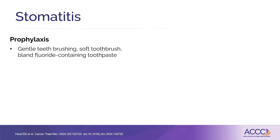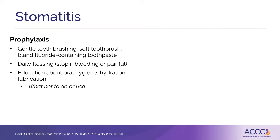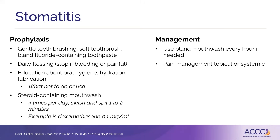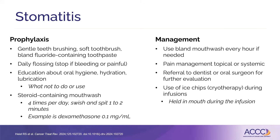What do we do about stomatitis? Prevention is key: gentle teeth brushing with a soft toothbrush, daily flossing — but don't floss if you're bleeding or it's painful — good oral hygiene, and non-alcohol mouthwashes. You can use steroid-containing mouthwashes four times a day, swish and spit — for example, dexamethasone 0.1 milligrams per mL. I've used this with other agents, and if this is a concern you can use it prophylactically. For management, make sure patients use bland mouthwashes like saltwater with baking soda, pain management, topical management for areas of soreness, referral to a dentist or oral surgeon, and ice chips during the infusion to potentially decrease blood flow and reduce drug exposure to the mouth.